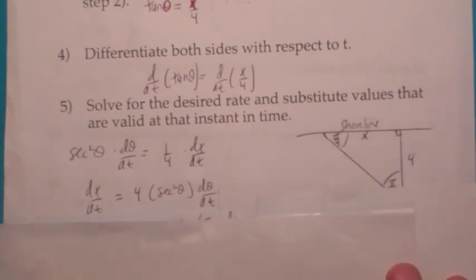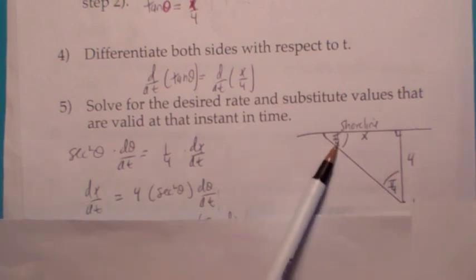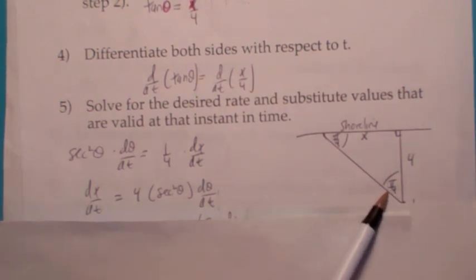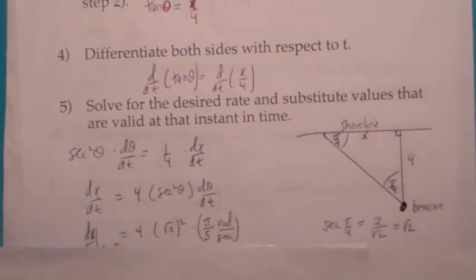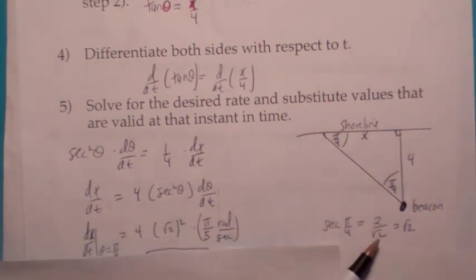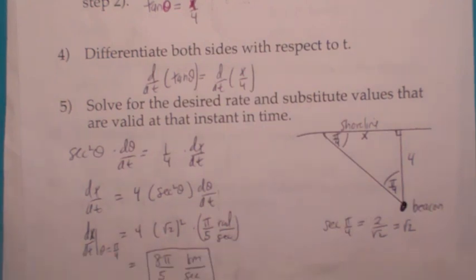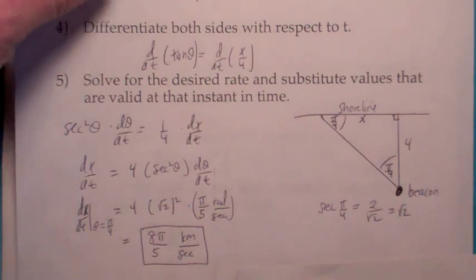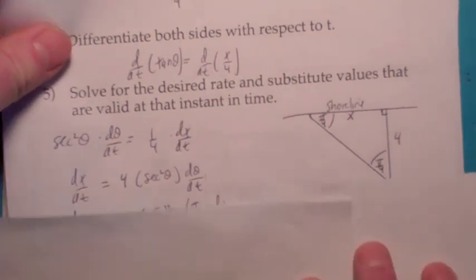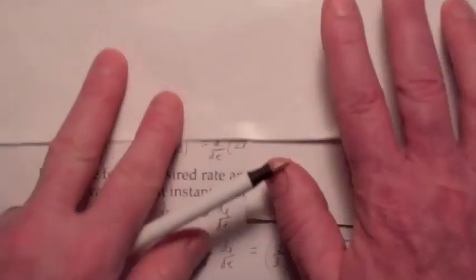Now to finish this problem, we have to plug in at that instant when it has an angle of 45 degrees or pi over 4 with the shoreline. That means this angle is pi over 4, theta is pi over 4. So you need to know what secant of pi over 4 is. Secant of pi over 4, that's 1 over the cosine, so it would be 2 over square root of 2, which is just square root of 2. So you plug in square root of 2 for secant. So this whole thing becomes a 2 when you square it, and your final answer is 8 pi over 5 kilometers per second. So again, that would be an example of a trigonometric function problem. I think we've got time for one more here.